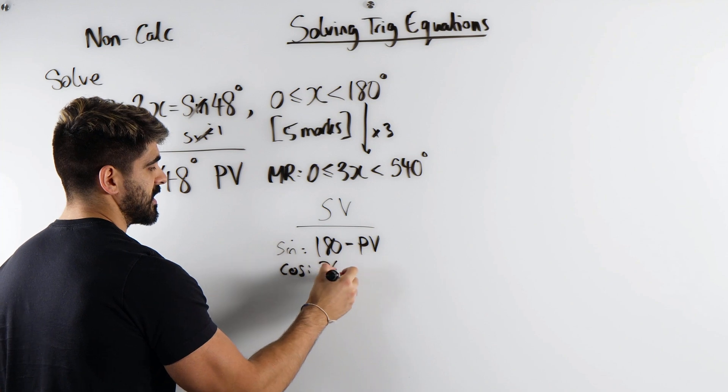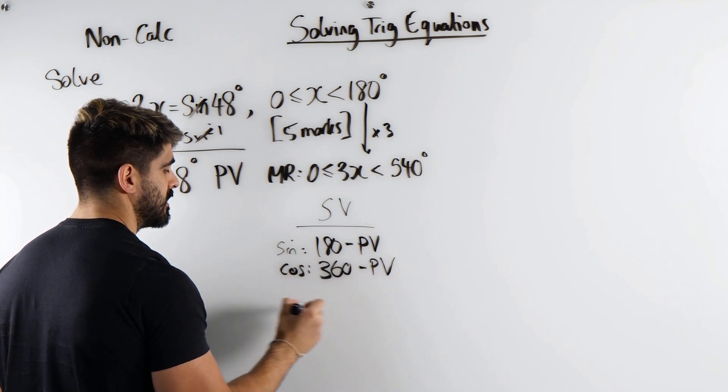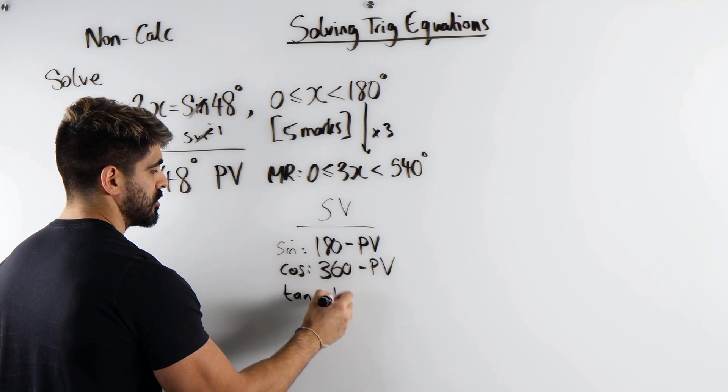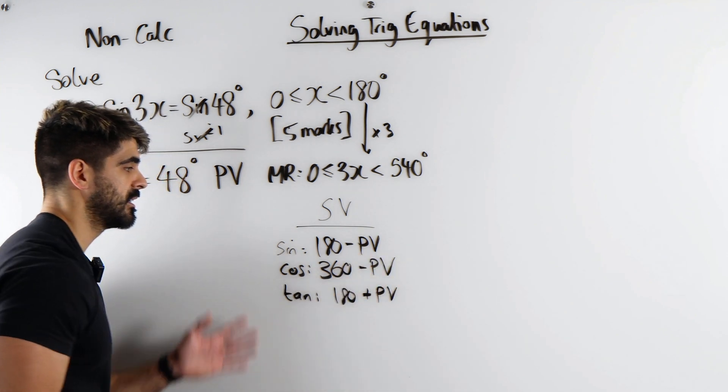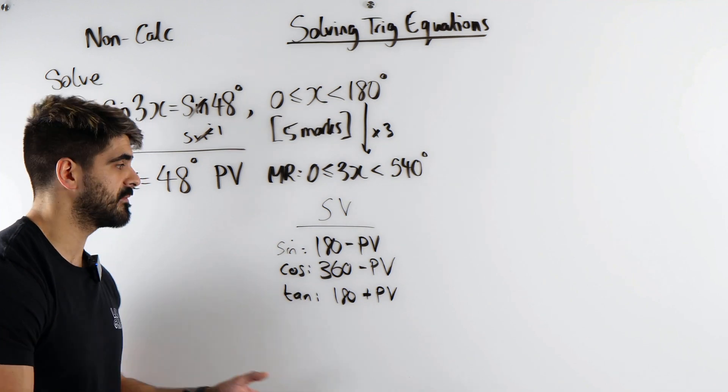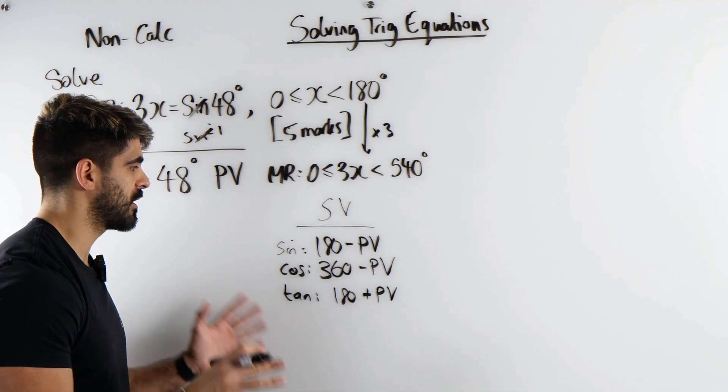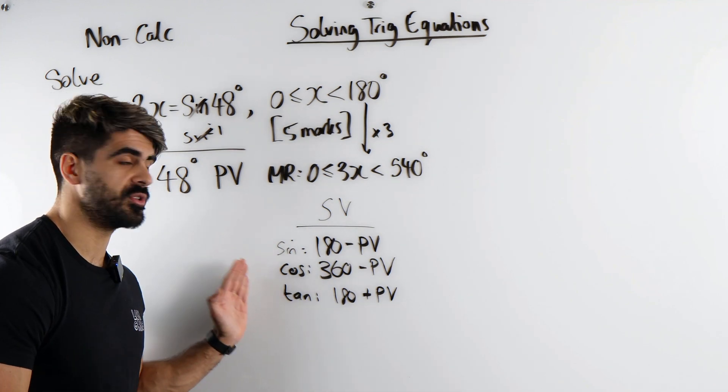And for tan, you do 180 plus the primary value. Make a note of this. Save this video and take a picture, do whatever you need to do. These are the only three things you need to remember. And then once you've found these, you just add or minus 360 to get all the other values.